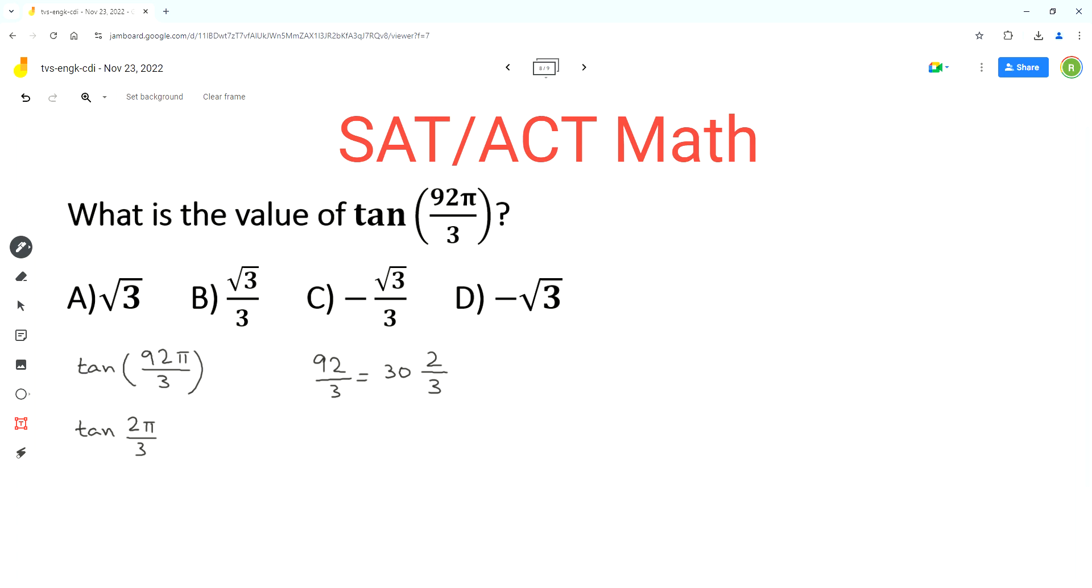So we are able to change tan of 92π over 3 into tan of 2π over 3. There is a very important concept we need to understand to solve this type of problem.